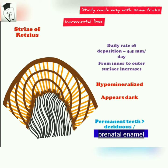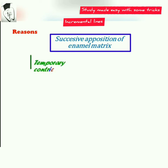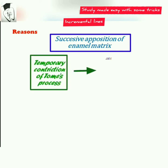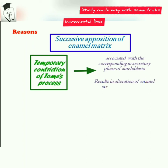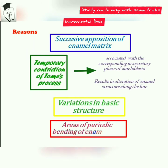The reasons behind the formation of Stria of Retzius are: first, they are formed due to successive apposition of enamel matrix and the temporary constriction of the Tomes process, associated with the corresponding secretory phase of the ameloblasts, resulting in alteration of enamel structure along the line. The second reason is variations in the basic structure, and the third is areas of periodic bending of the enamel rods.